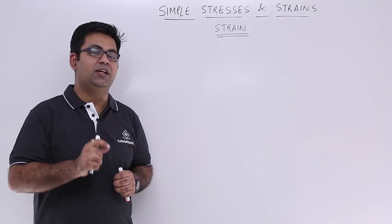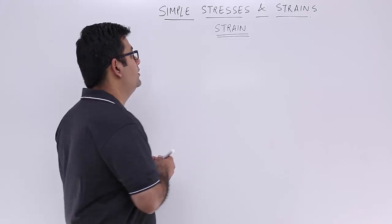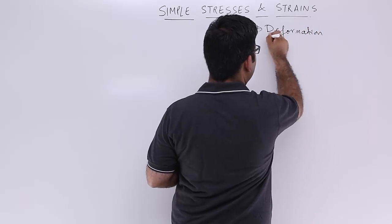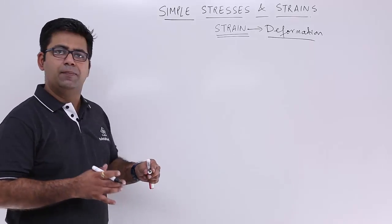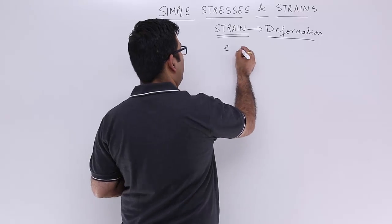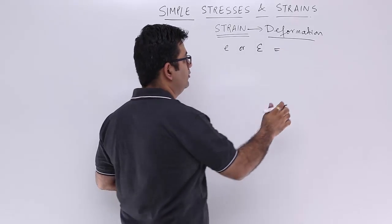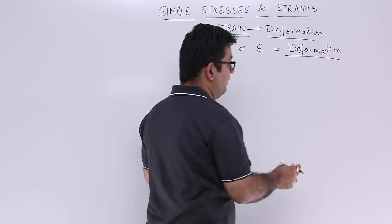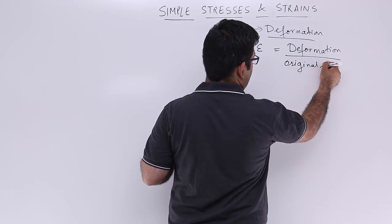After understanding what stresses are and the types of stresses, let's understand what strain is. Strain in a broad term means nothing but deformation — when a body gets deformed, we say that the body is being strained or strain is being produced in the body. Mathematically, strain is denoted by either small 'e' or epsilon, and it is nothing but the ratio of the deformation — the change in the dimension of that body — upon the original size.